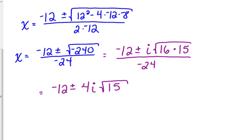240, we want to express it as the product of a perfect square and something that's not a perfect square. So we want the biggest one, 16 times 15. The square root of 16 is 4, so 4 comes out of the square root. 15 is not a perfect square, so it stays under.